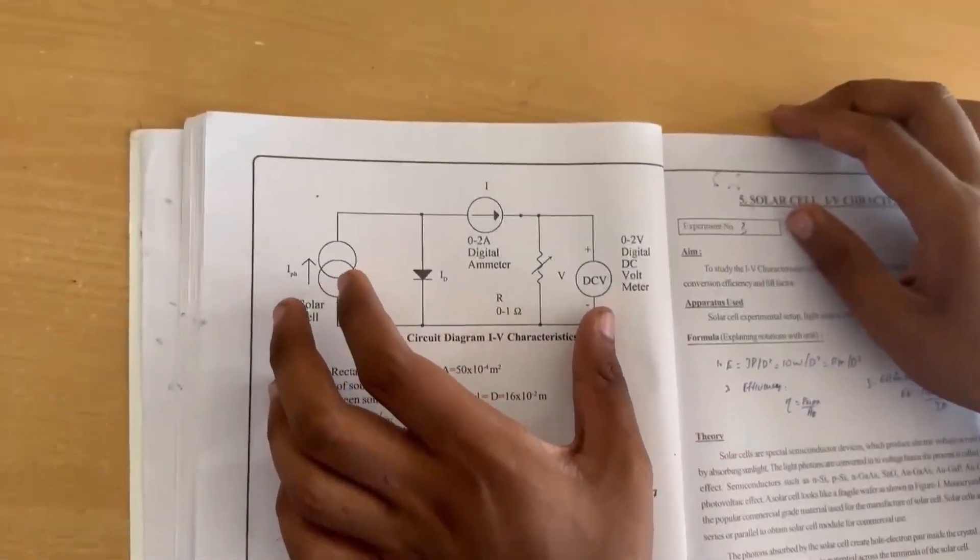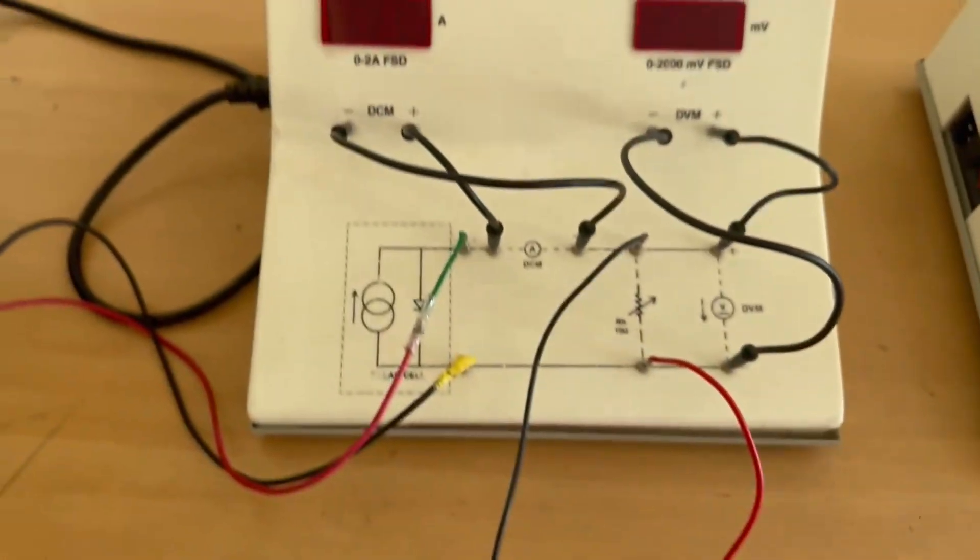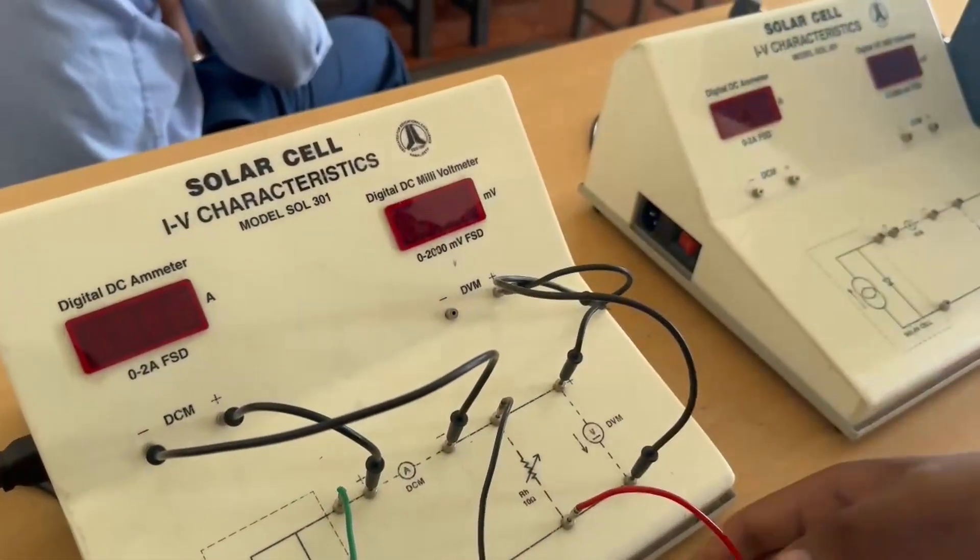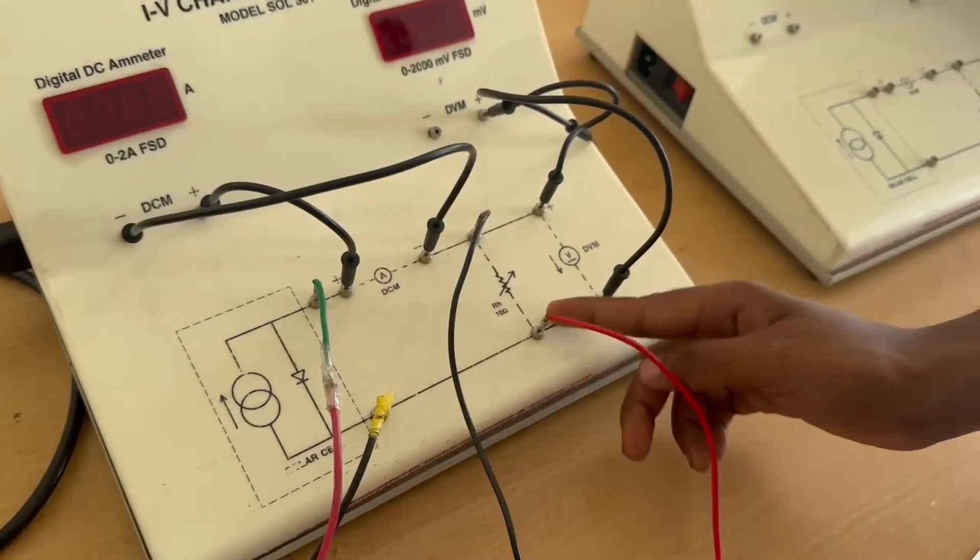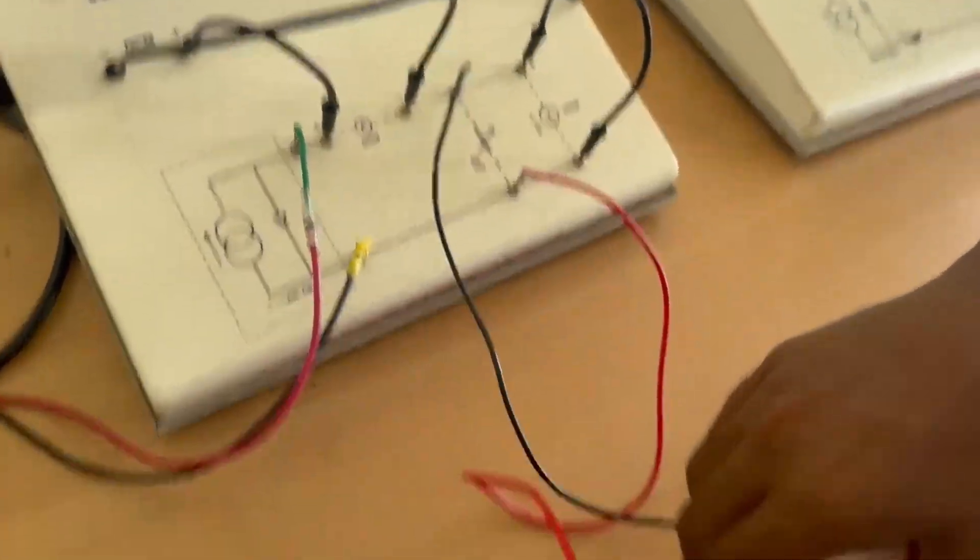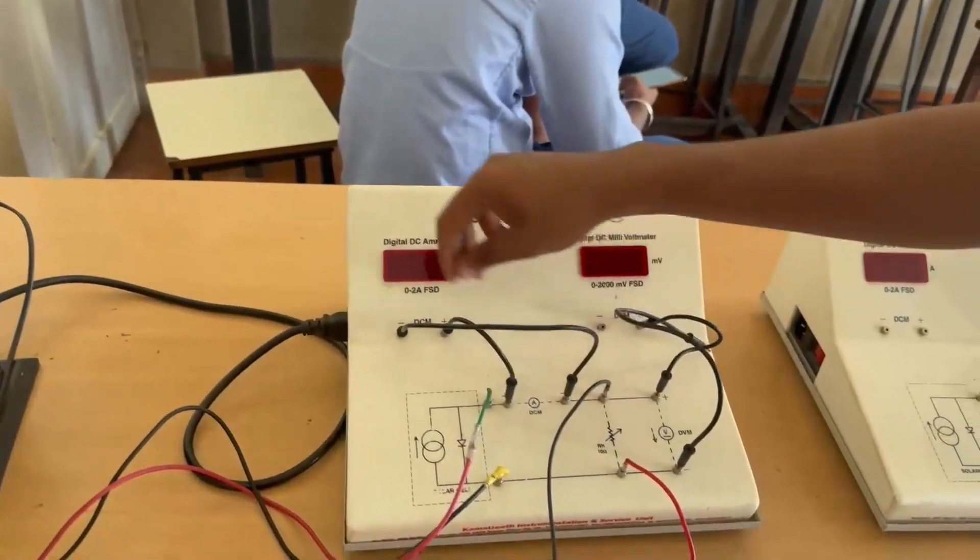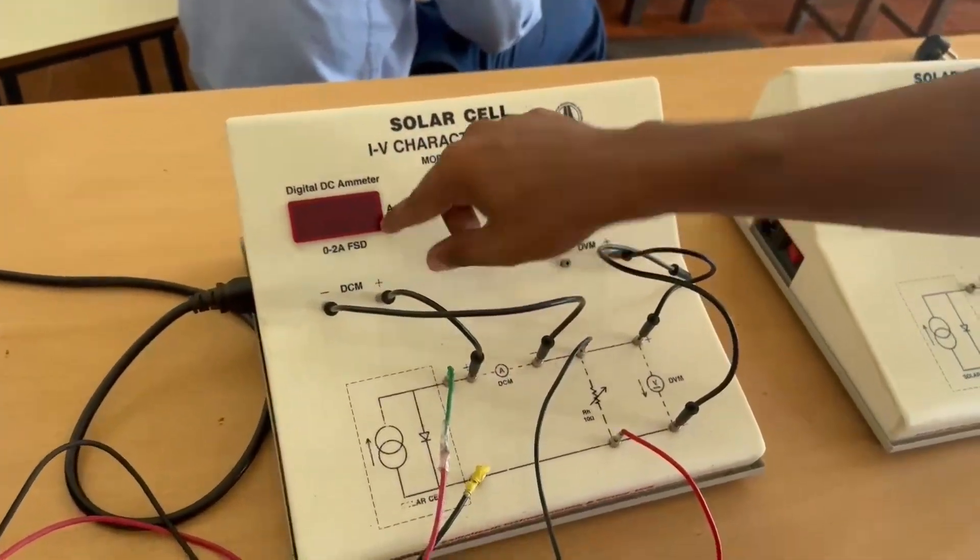Using this circuit diagram, we make the circuit. Connect positive to positive and negative to negative. The red wire and black wire are connected to the resistance box. These are connected to the solar cell, and plus to plus and minus to minus for the voltmeter.